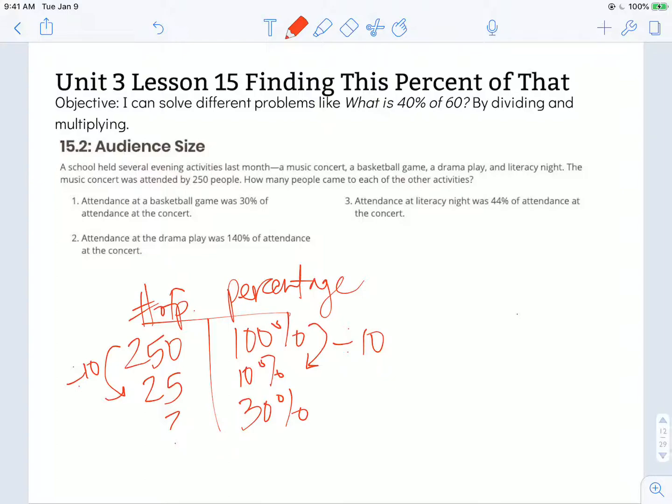So 10% of the people that were at the music concert is 25 people. So if I wanted to get to 30% from this point, then I would just take that 10% and multiply by 3. So there were three times as many people as 25 at that concert. So there were a total of 75 people at the basketball game.